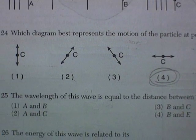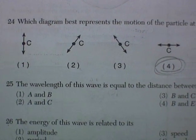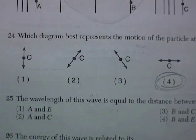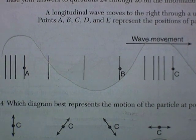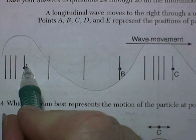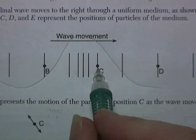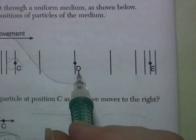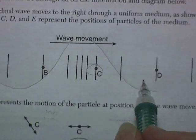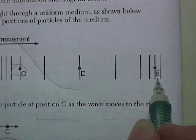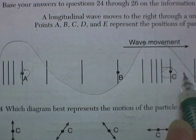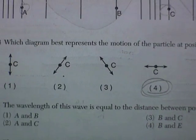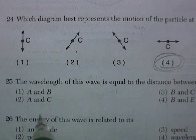The wavelength of this wave is equal to the distance between points. Well, we want identical points on subsequent waves. Gosh, I'm going to say A and C. These, B and D, are kind of off from each other. E is kind of in the middle of this compression region. I'm saying A and C. Let's see, A and C. There's an answer.